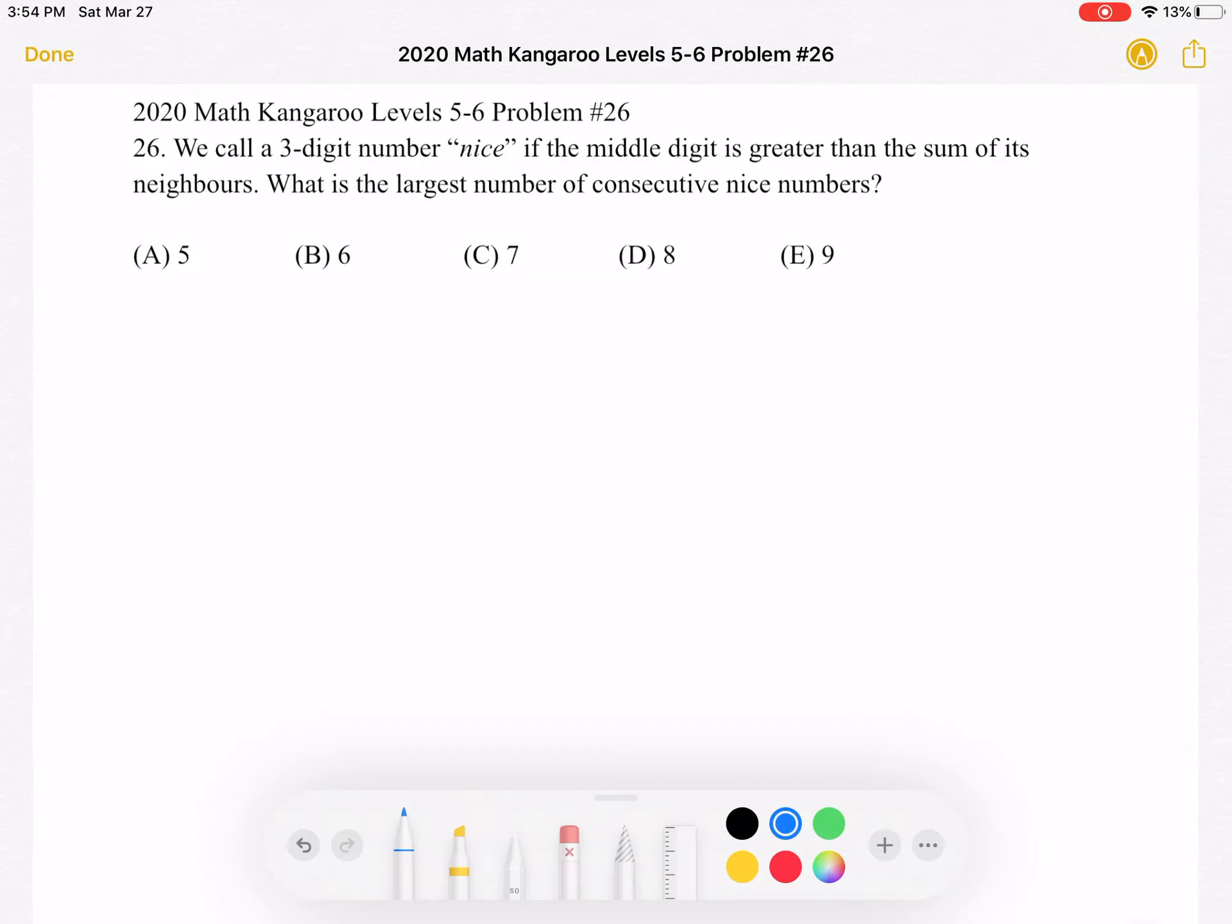A 5, B 6, C 7, D 8, or E 9. This is the problem as it originally appeared on the test.